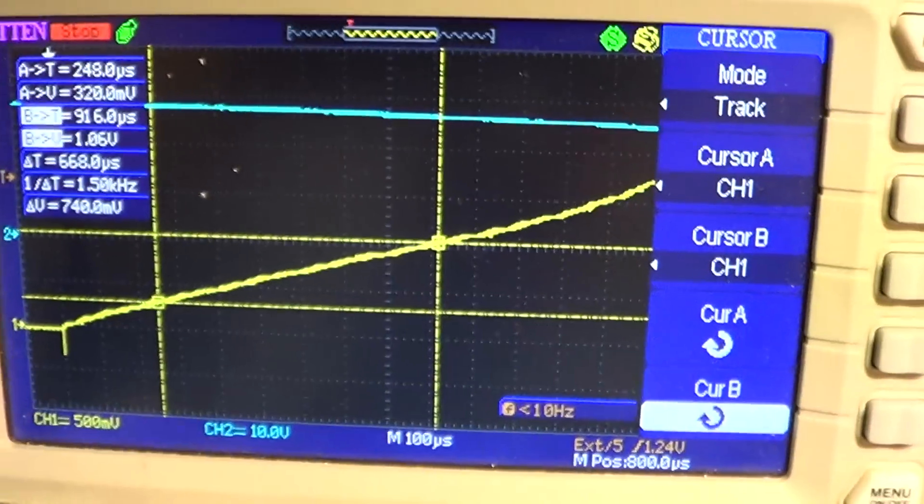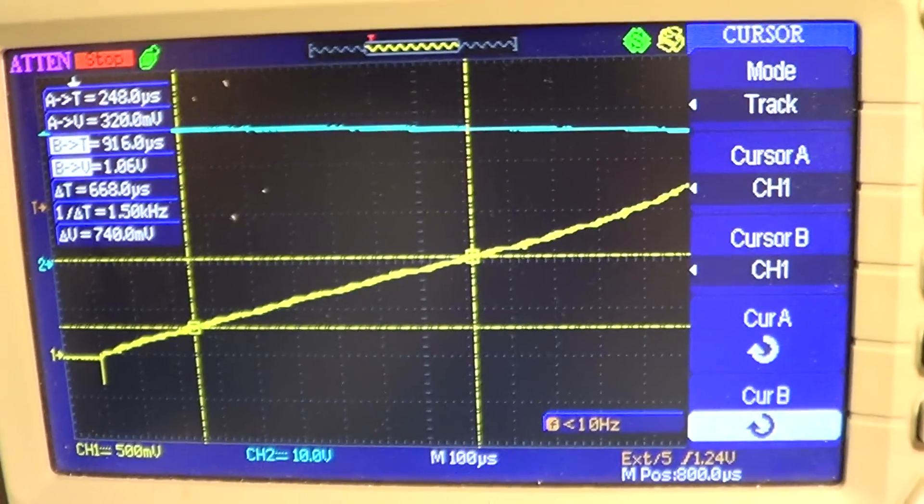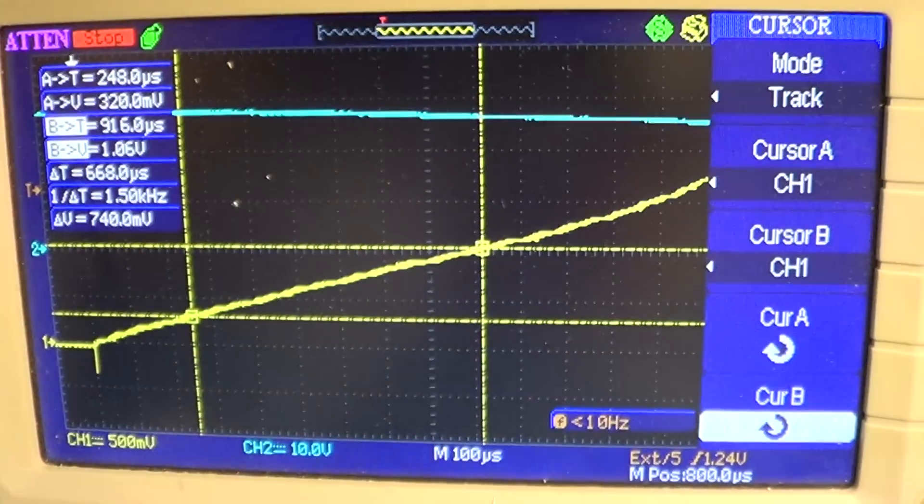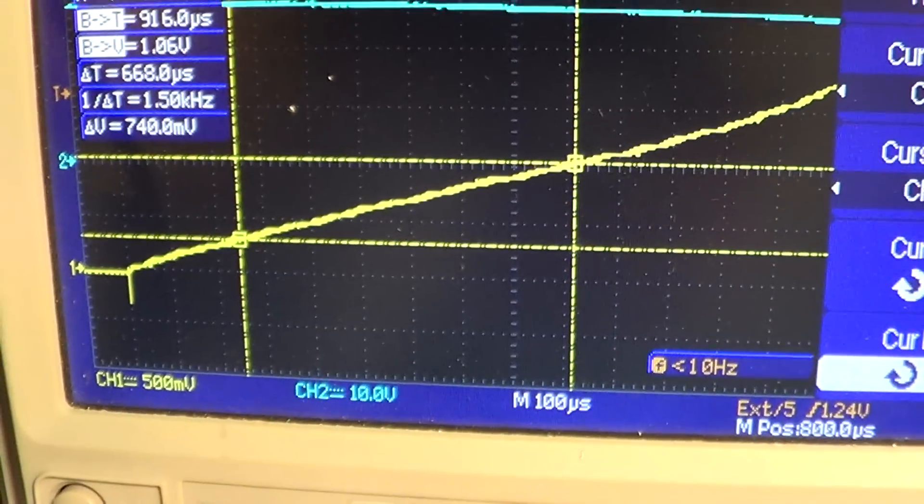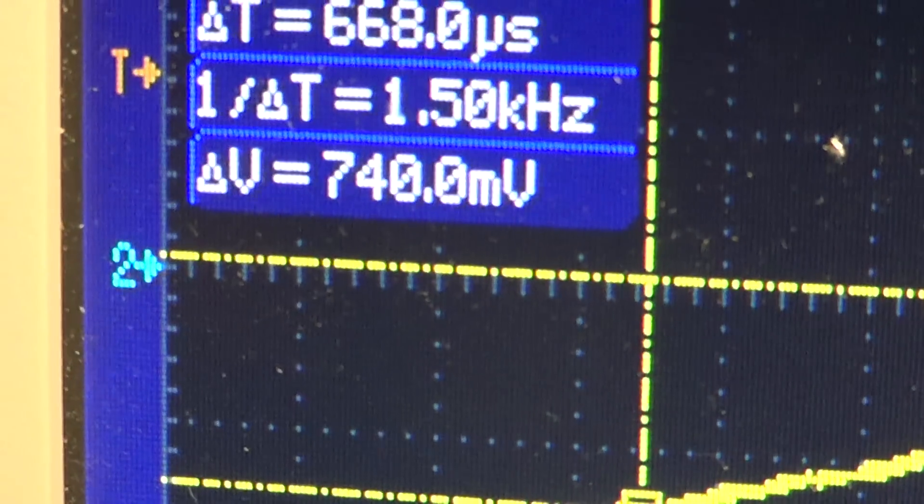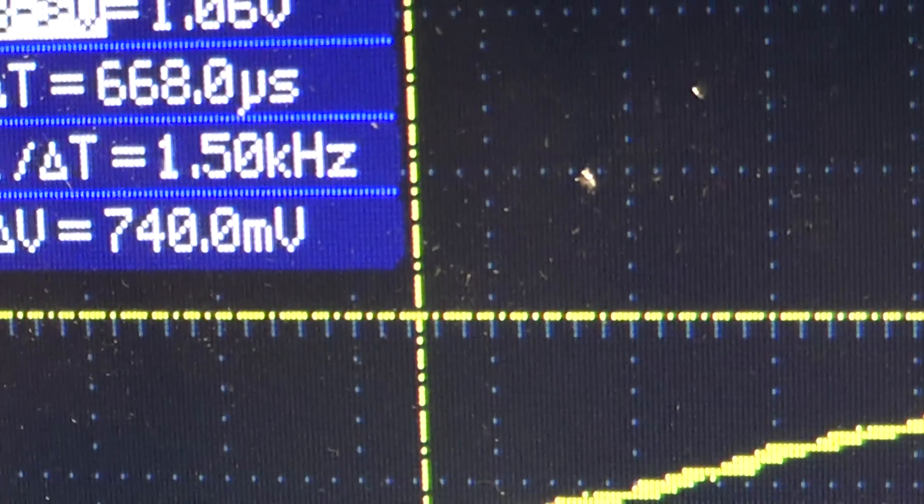So we can measure the inductance by the slope here. Between the two cursors, Delta V is 740 millivolts.